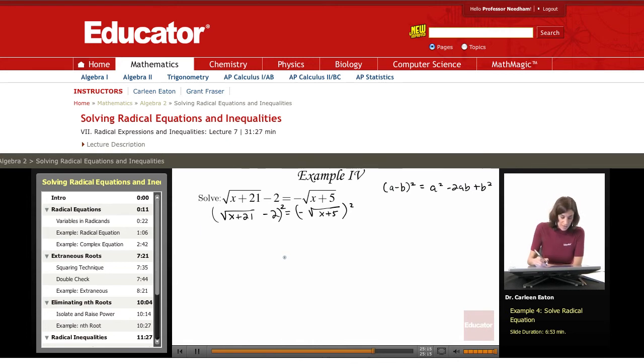I'm just going to go ahead and say, okay, a equals the square root of x plus 21 and b equals 2.